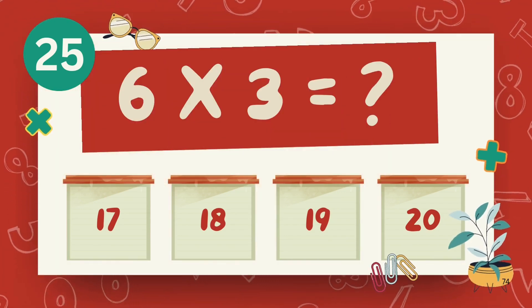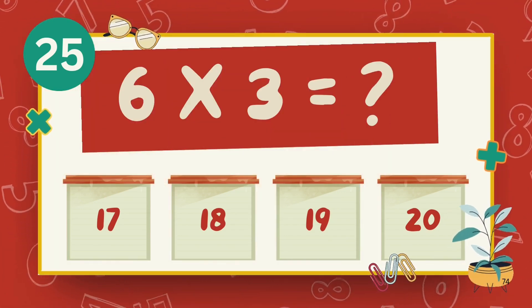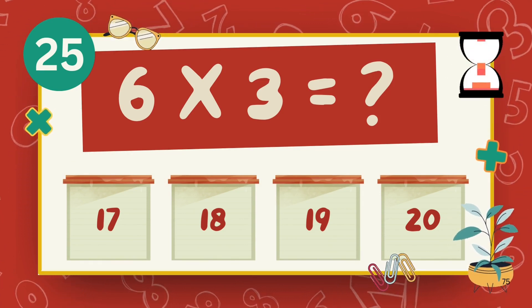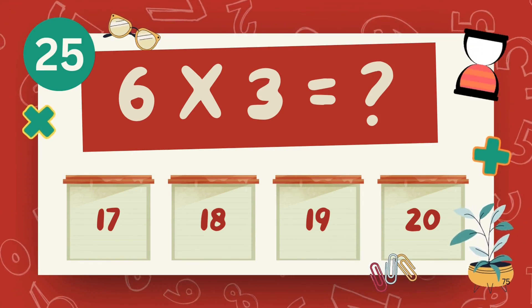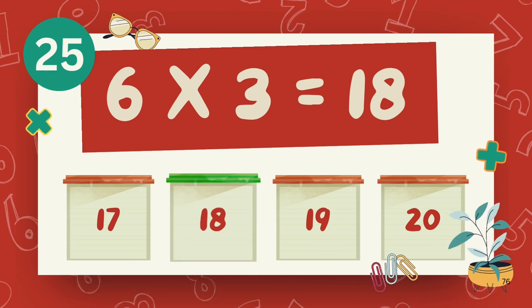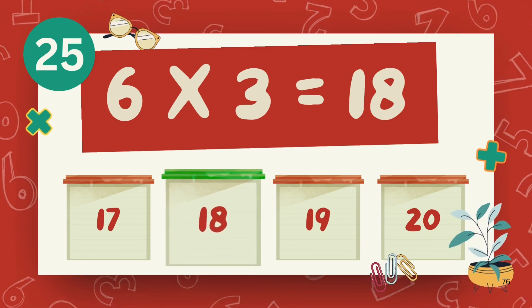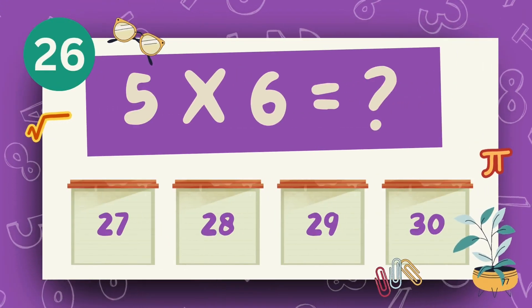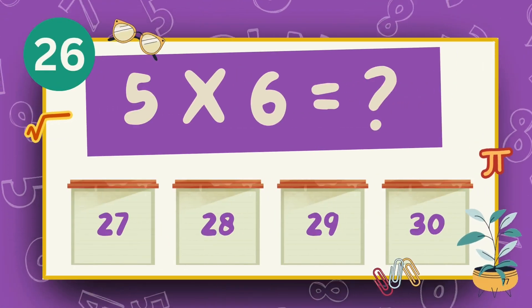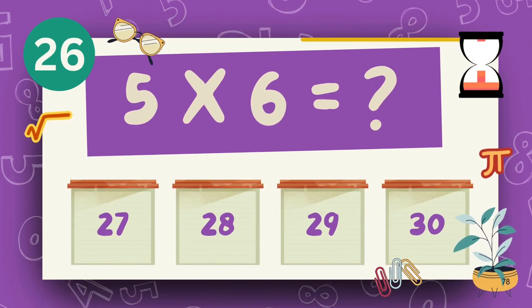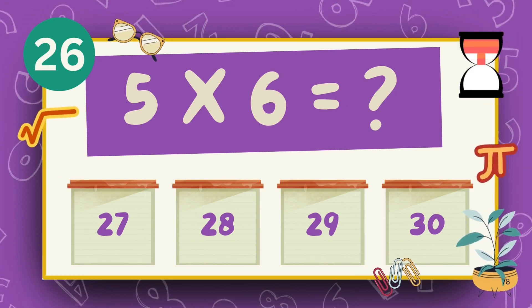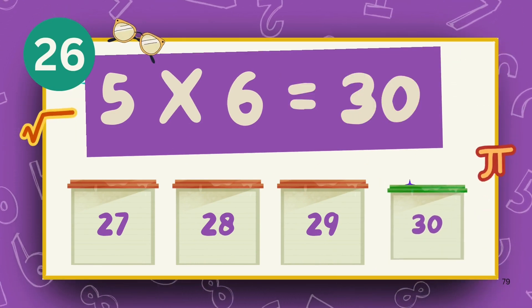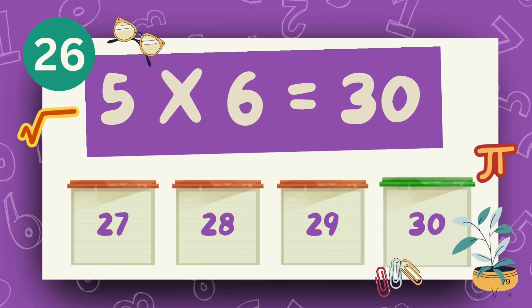What is 6 multiply 3? What is 5 multiply 6? The answer is 18. The answer is 30.